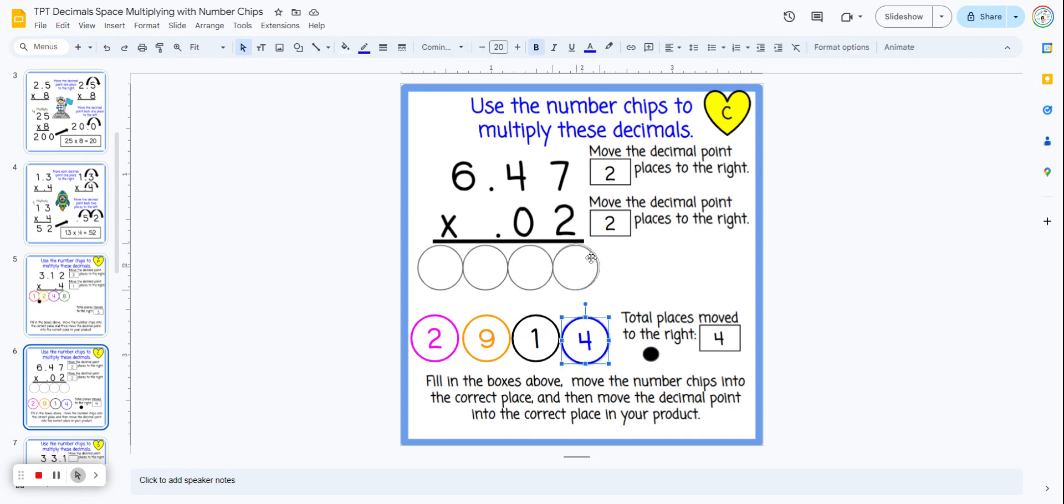We're going to multiply. 2 times 7 is 14. We're going to carry a 1. 2 times 4 is 8, plus 1 is 9, and 2 times 6 is 12.